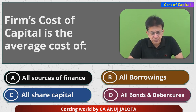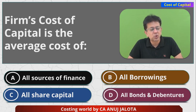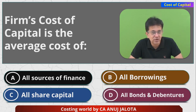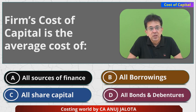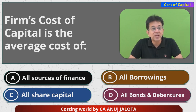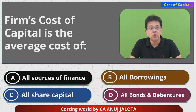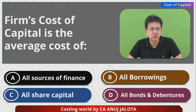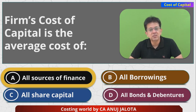Option A should have been refined further to say 'all long-term sources of finance.' We never try to find out the cost of short-term sources, because our basic objective is to calculate the minimum rate required in the long term so that all expectations are met. We never find out the cost of creditors or bank overdraft. So out of the four options, the best answer is A. I'll see you all next time, bye, take care.